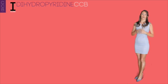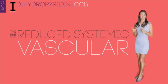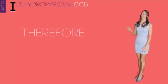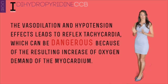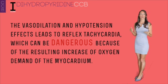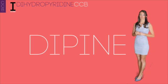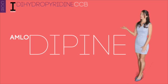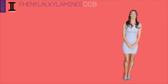Calcium channel blockers are divided into three subclasses. The first class is dihydropyridines, the most smooth-muscle-selective class. These drugs reduce systemic vascular resistance and arterial pressure, and are primarily used in hypertension. When given for angina, the vasodilation and hypotension effects can lead to reflex tachycardia, which is very dangerous because of increased oxygen demand to the myocardium — making this class a less desirable choice for angina. Dihydropyridines usually end in "-dipine" and include amlodipine, nicardipine, nifedipine, and nisoldipine.